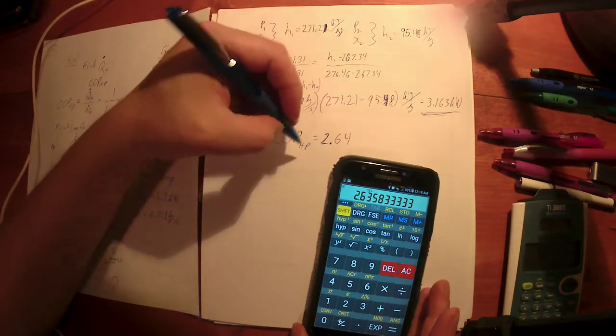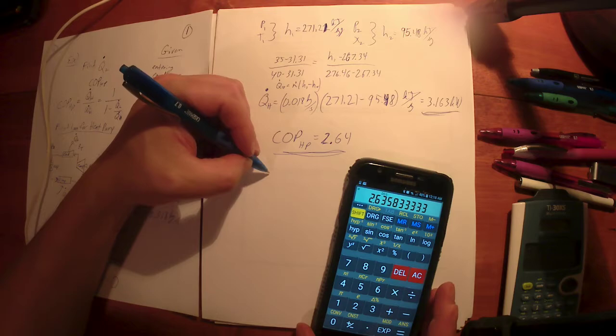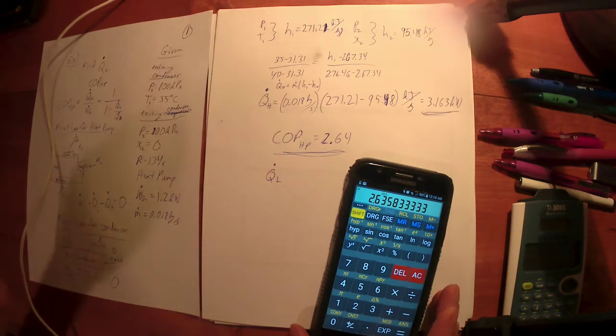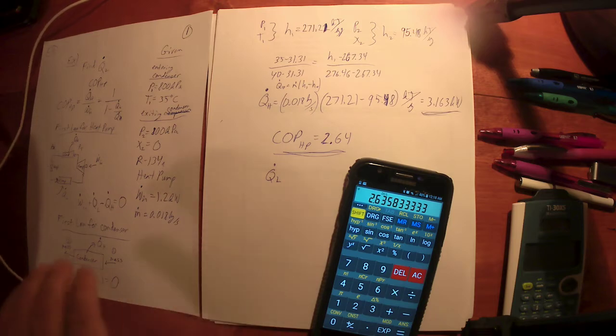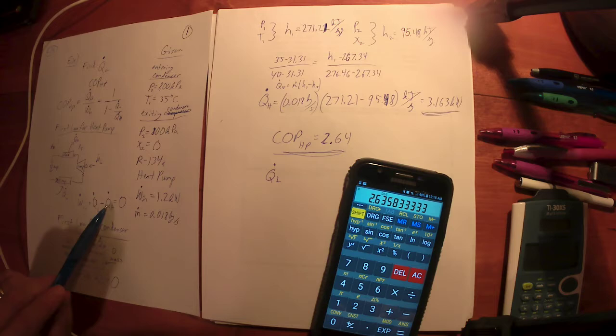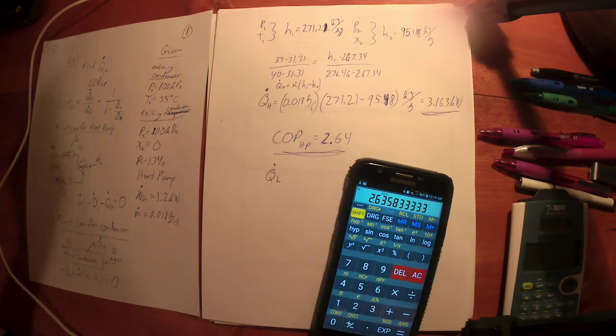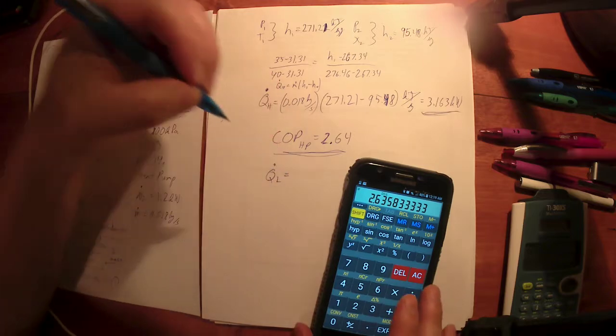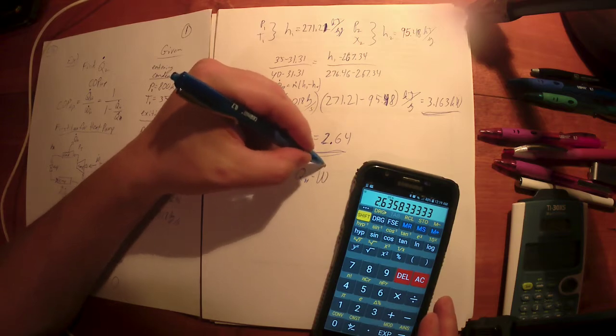2.64 is my COP, that's one answer. And my second answer, they wanted to know Q dot L. There's various ways you can find that. We've already written this expression here. We know the work in, we know the power input. We already know QH, we know the power input, we're looking for QL. That works. I'm going to say QL, we'll solve this guy, is equal to Q dot H minus the power input.